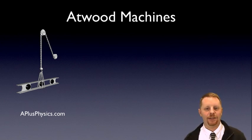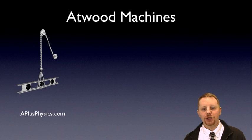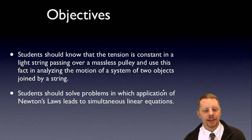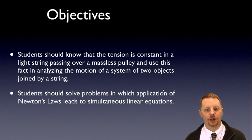Hi, everyone. I'm Dan Fullerton, and I'd like to talk to you today about Atwood machines. Our key objectives here are going to be to introduce students to the idea that tension is constant in a light string that passes over a massless pulley, and you should be able to use this fact to analyze the motion of a system of two objects joined by a string.